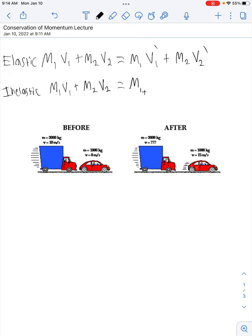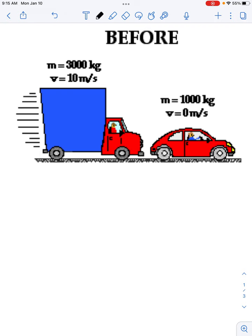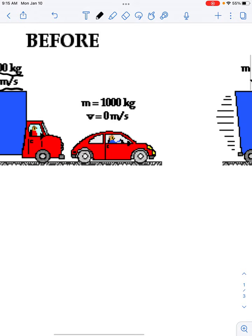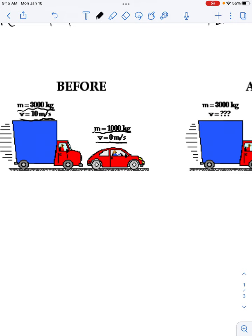Okay, so I'll do a couple examples, and then you guys will be able to see how this stuff works. All right, so what we have here is a big truck that's moving at 10 meters per second and has a mass of 3,000 kilograms. It hits a little red car that has a mass of 1,000 kilograms and is stationary. It has a velocity of zero. That's all before the collision.